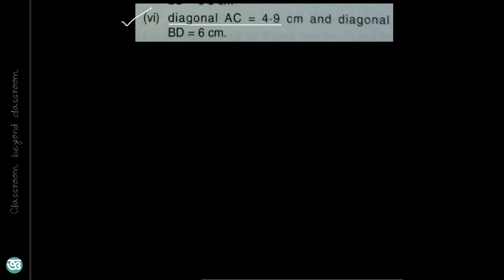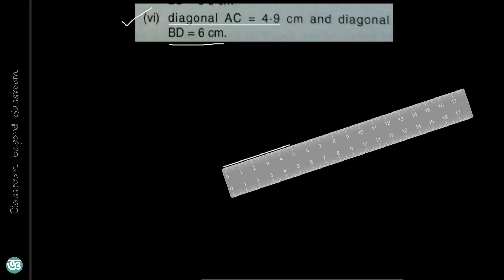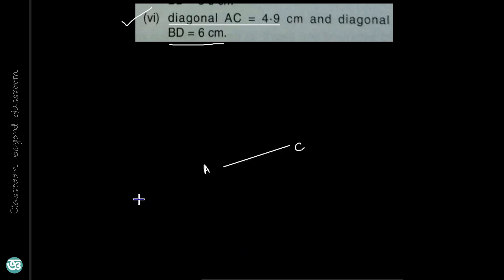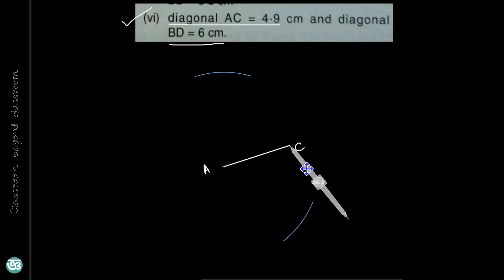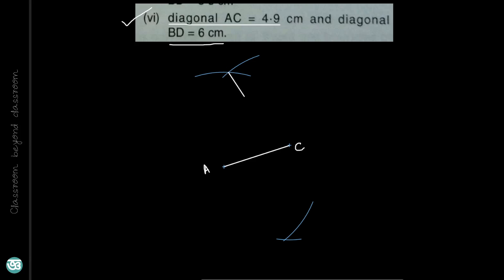Question number 6: diagonal AC is equal to 4.9 cm and diagonal BD is equal to 6 cm. Start with the 4.9 cm diagonal AC. Since diagonals bisect each other at right angles, construct a perpendicular bisector. Draw an arc, then another arc on the other side of diagonal AC with C as center at the same radius, and join the two intersection points. This is the perpendicular bisector of diagonal AC.